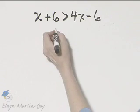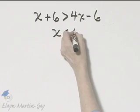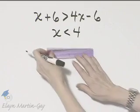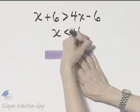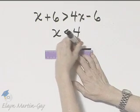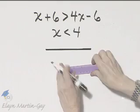So once again, I have x is less than 4. Let me graph that on a number line. I'm drawing a short segment and I'll put arrowheads on it and use that as my number line.